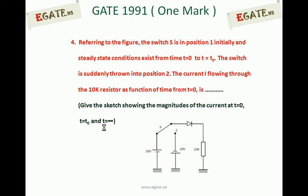The question is based on this diagram. First, look at this diagram. Referring to the diagram, the switch S is in position 1 initially and steady state conditions exist. From time T equal to 0 to T equal to T0, the switch is suddenly thrown into position 2. The current flowing through the 10 kilo ohm resistor as a function of time — you must draw the current waveform along with magnitudes.